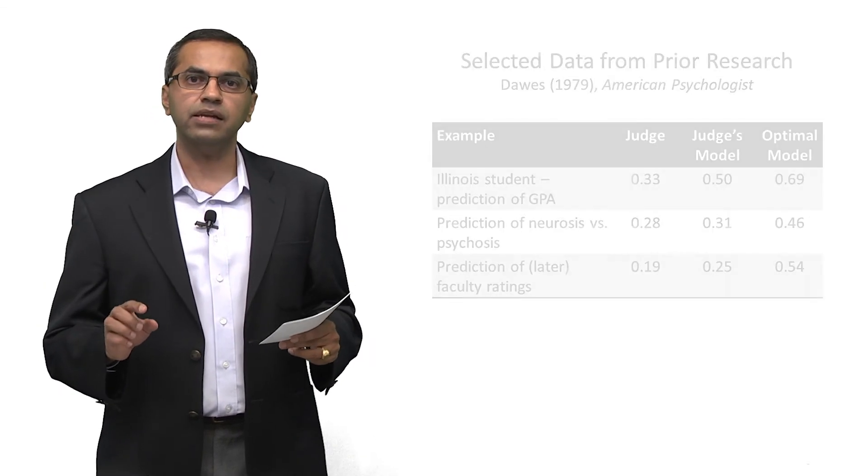This process of taking a regression model to capture your own intuition is called judgment bootstrapping. Essentially, what it is, is that you're using your intuition, but you're letting an equation capture it. And by using that equation, you can be more accurate and more predictive about your own prediction. And that's the basis of judgment bootstrapping.